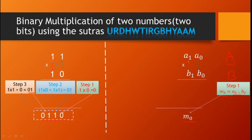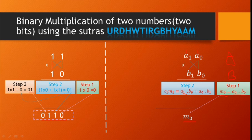Step 2 is cross multiplication: A1 into B0 plus A0 into B1. Since we are adding two bits, we use a half adder. The half adder gives a sum, which is taken as M1 — the second bit of the result — and a carry C1, which is fed forward to Step 3.